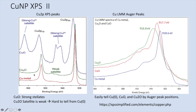However, the satellite for Cu2O is very small, so it's harder to tell Cu2O versus Cu metal. That's when the Auger (OJ) peak comes into play. Cu metal has its peak at a certain position, CuO is a little bit lower, and Cu2O is far away — about a 2 eV binding energy difference. So that's pretty significant.